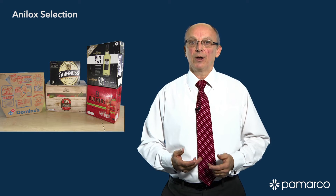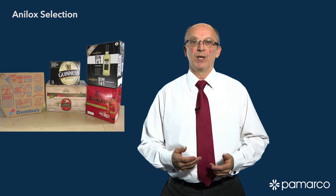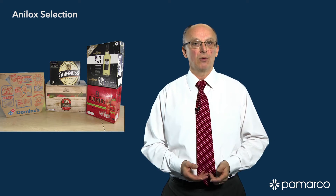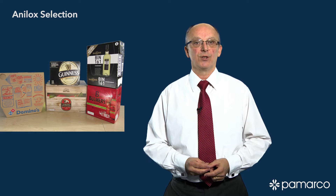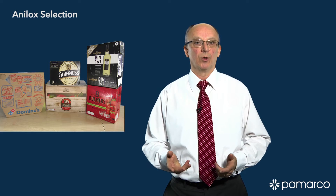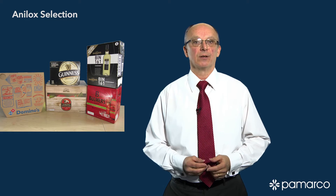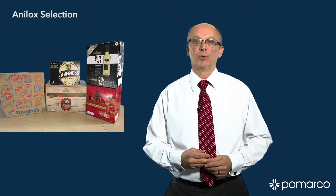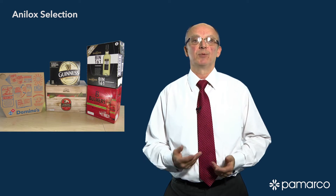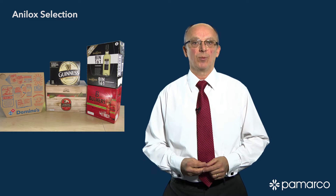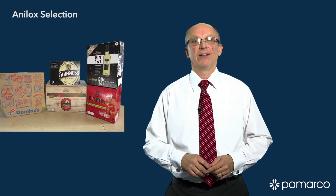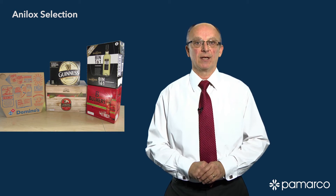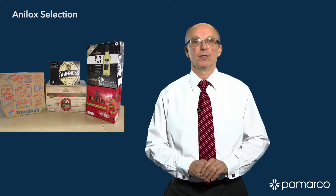In corrugated board printing we select Anilox totally in relation to the paper board that you're printing on. That's because with the different board qualities and absorption of the paper you need either a higher or lower amount of ink to be transferred.